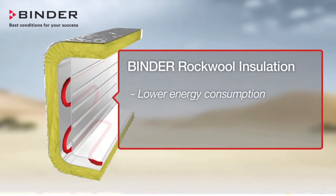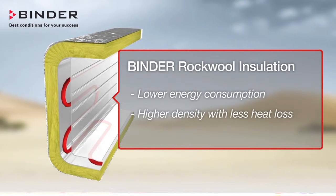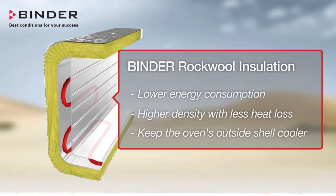Binder Insulation gives you lower energy consumption, higher density with less heat loss, and keeps the oven's outside shell cooler.